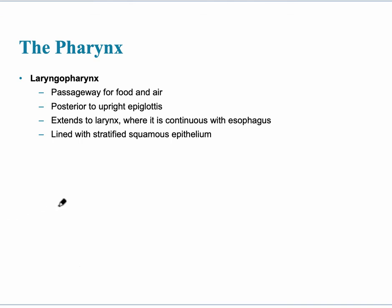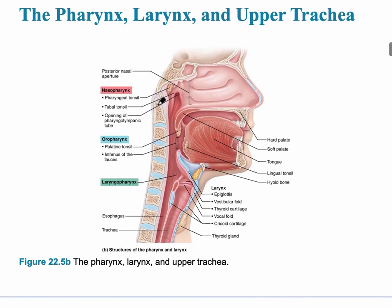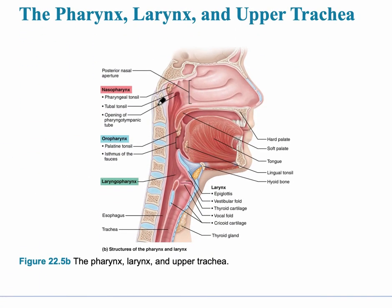The last and most inferior portion of the pharynx is the laryngopharynx, which leads to the bottom of the upper respiratory tract. Because the esophagus is also in the same region, it is a passageway for both food and air, and it is posterior to the upper right epiglottis. This slide here is showing the pharynx, the larynx, and the upper trachea — a few things that we've already talked about.